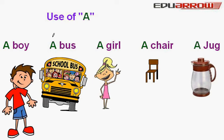Here are some examples. A boy — we add A before 'boy' because B is a consonant. A bus — we add A before 'bus' because B is a consonant.